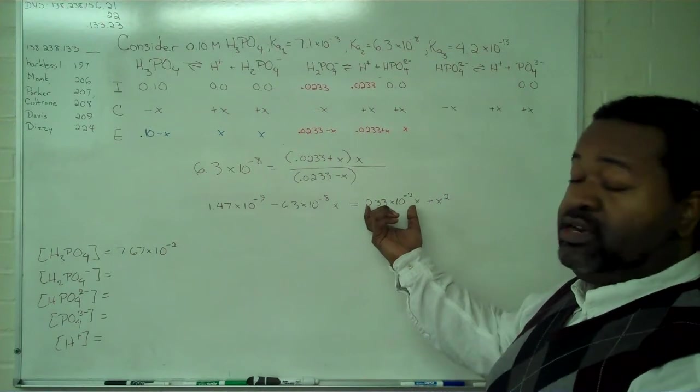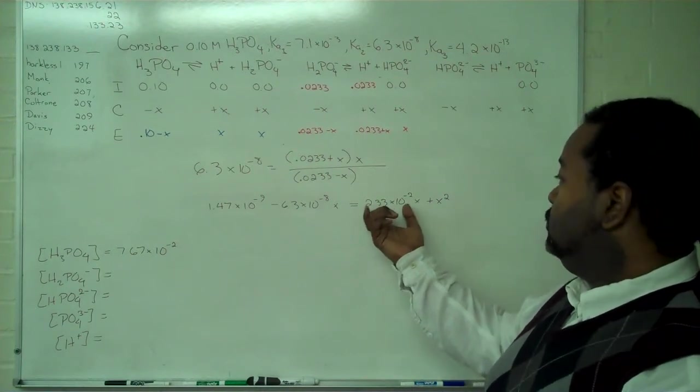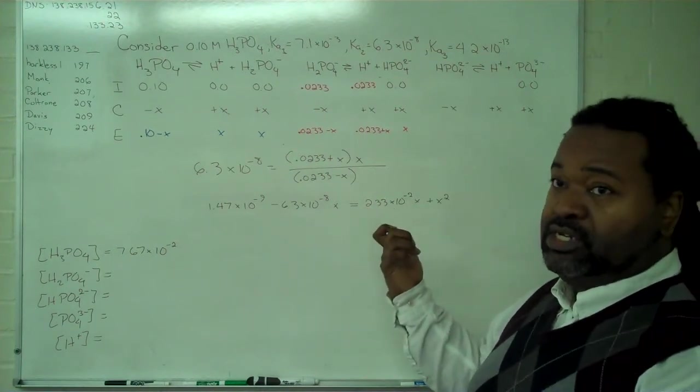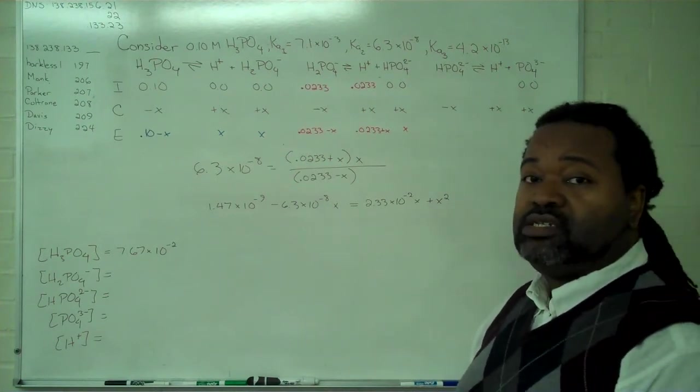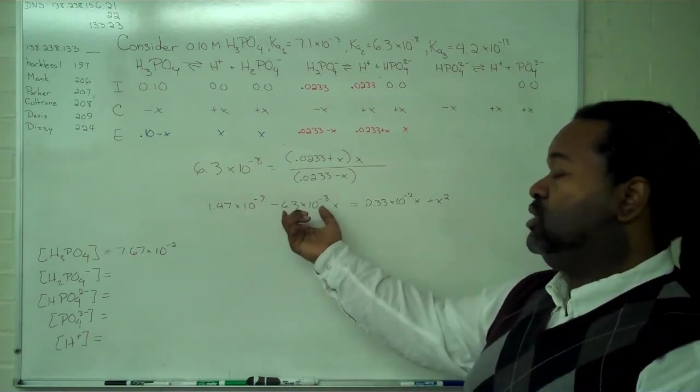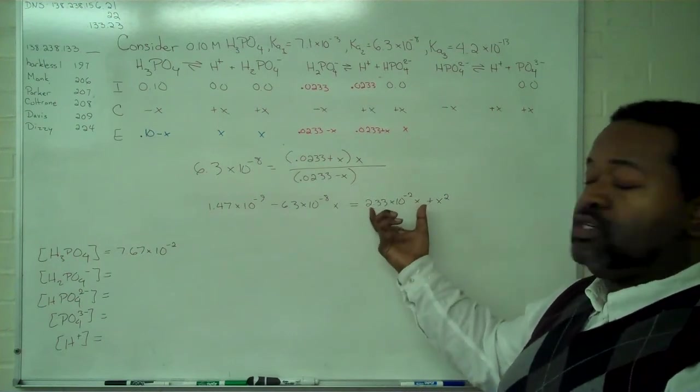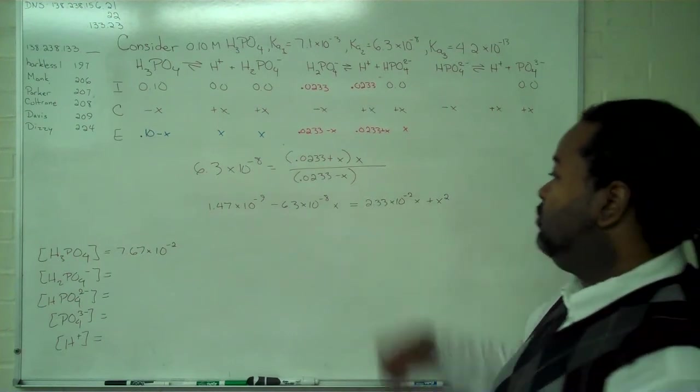Now, we compare the coefficients on the linear term. We have 2.33 times 10 to the negative 2 versus negative 6.3 times 10 to the negative 8. This number is exceedingly small compared to this one. So our entire linear term will come from here.